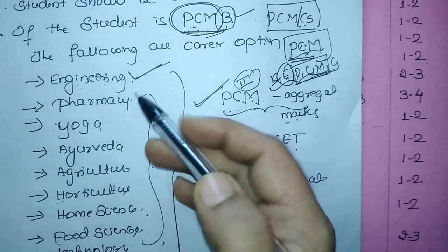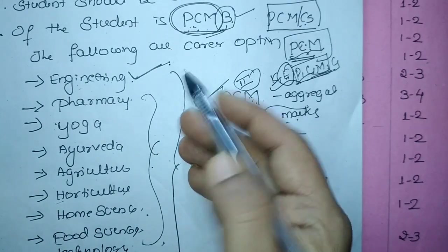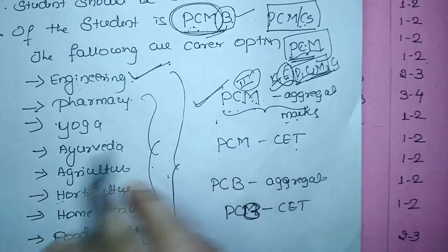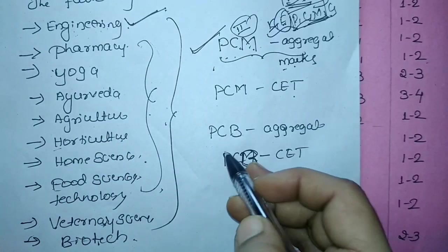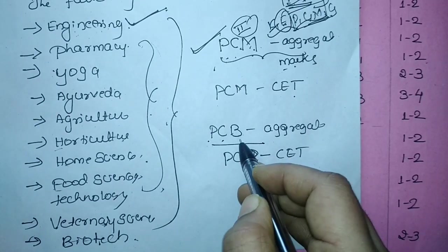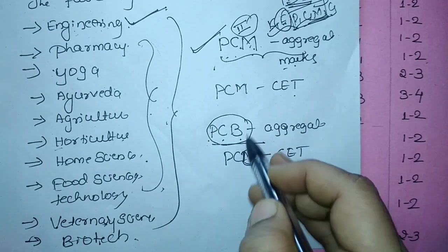But if they don't want to go engineering, they have one more option like they can opt these career choices. So for that they are going to consider PCB marks. Physics, chemistry, bio of your second PU exam you have written.